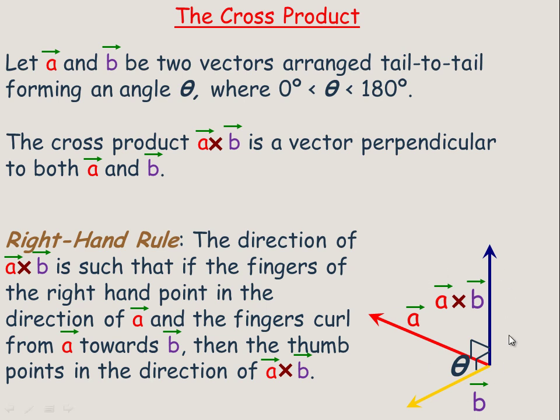This is only defined in three dimensional space. It's not possible for this to happen in two dimensional space. You do not take the cross product of two dimensional vectors.